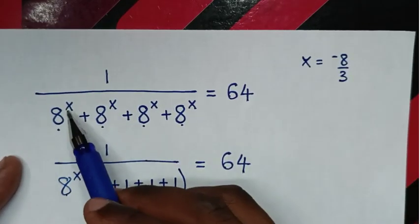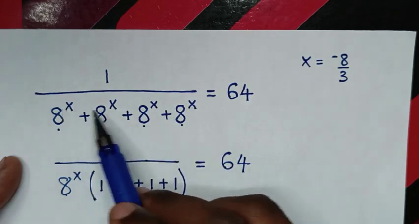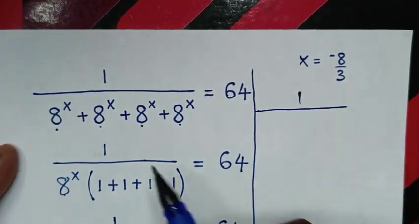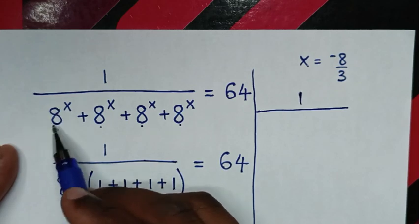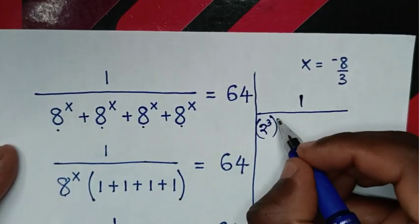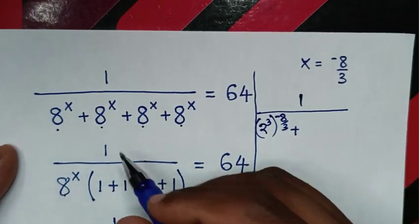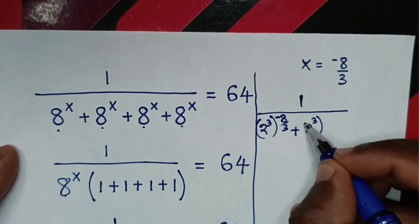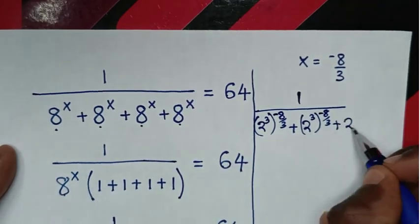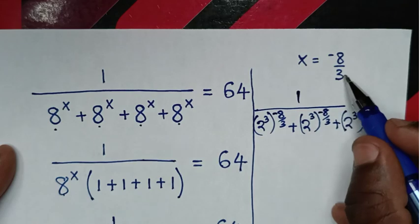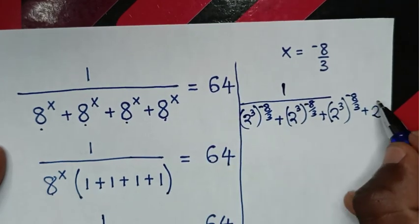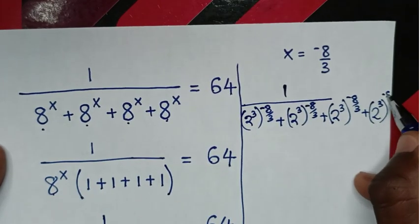Now let's check if x equals negative 8 over 3 is correct. We substitute negative 8/3 into each power: 1 over (2^3)^(−8/3) plus (2^3)^(−8/3) plus (2^3)^(−8/3) plus (2^3)^(−8/3). The 3s cancel in the exponents, leaving 2^(−8) in each term.